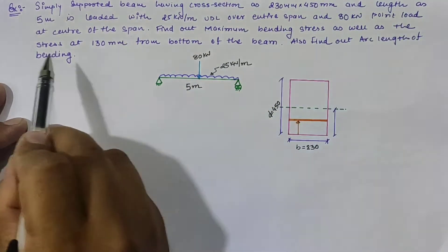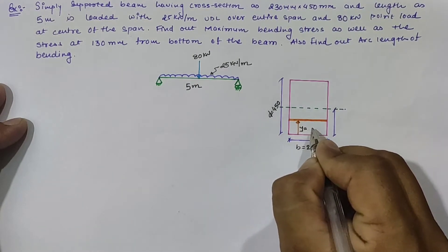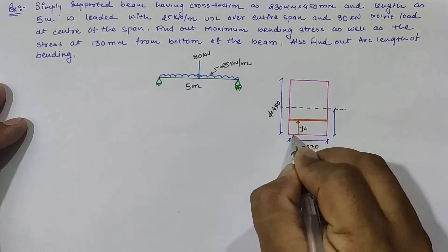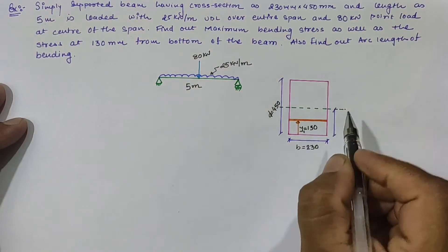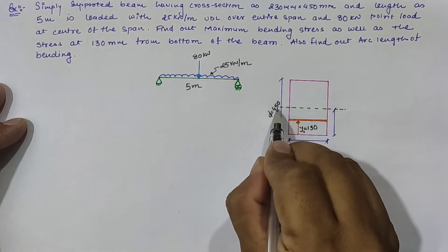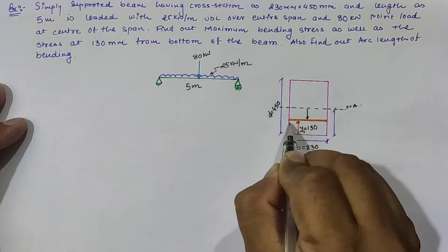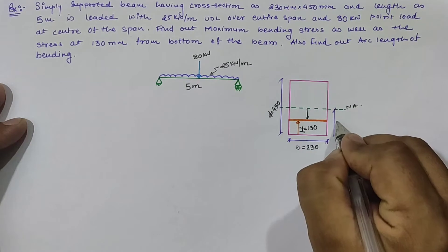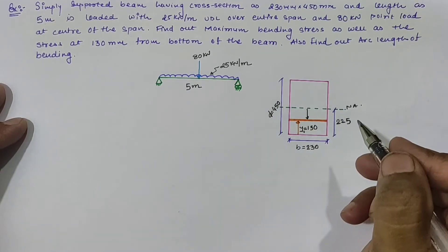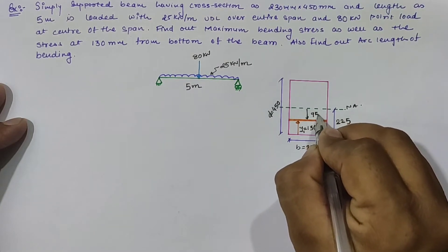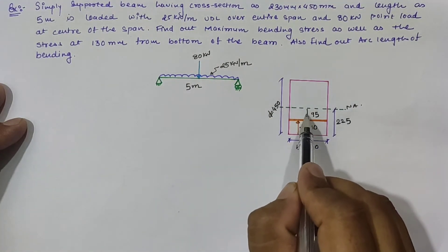We have to find the maximum bending stress as well as the stress at 130 mm from the bottom of the beam, as shown in the figure. For the point at 130 mm from the bottom, the distance from the neutral axis is D/2 minus 130, which is 225 minus 130, giving 95 mm from the neutral axis.